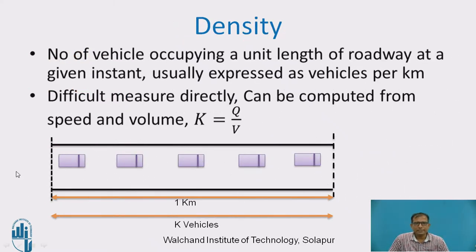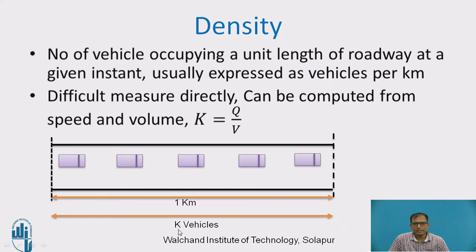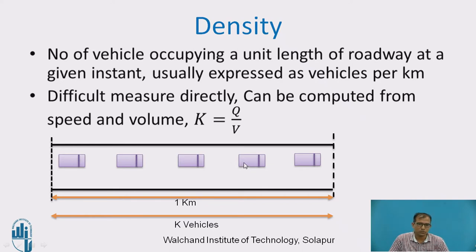Density is the number of vehicles occupying a unit length of roadway at a given instant, expressed in vehicles per kilometer — that is, how many vehicles are spaced in 1 kilometer of length, indicated by k. In practice, it is very difficult to measure k directly; we need an elevated observation point so that the full 1-kilometer length is visible and we can count the vehicles within it.